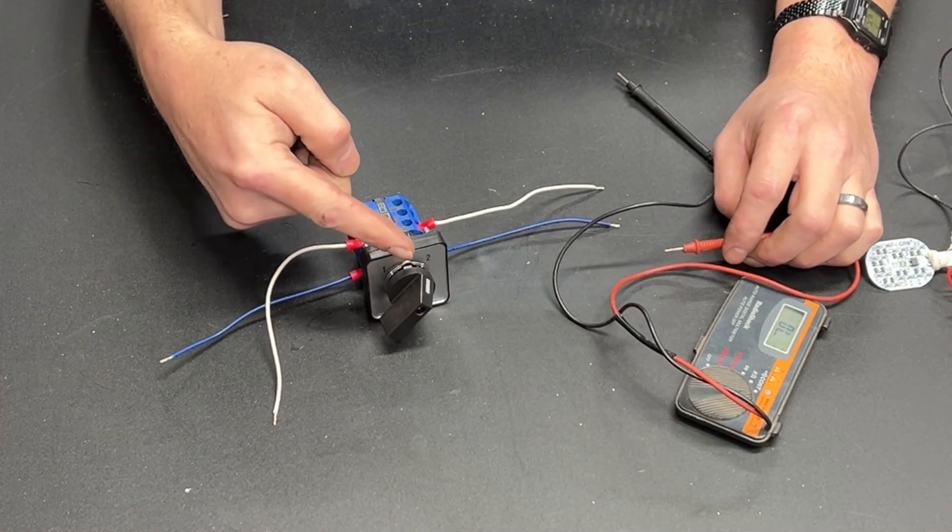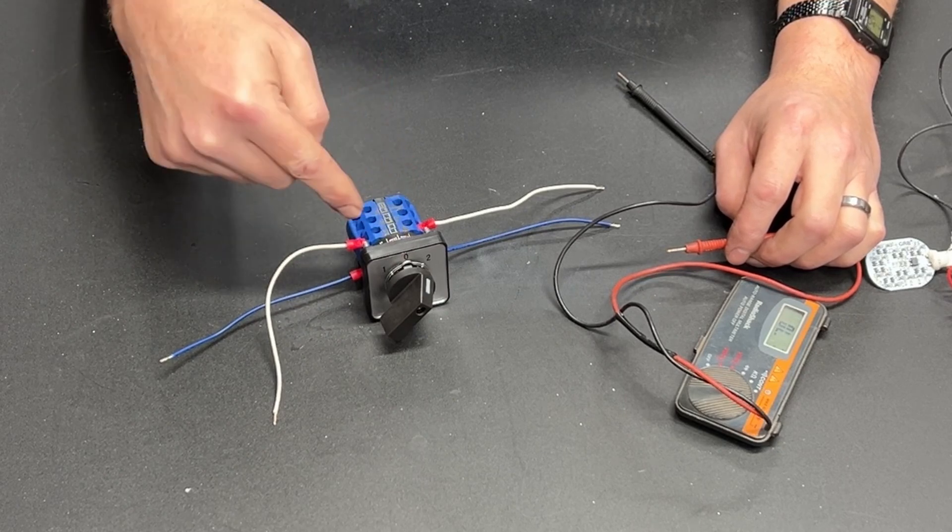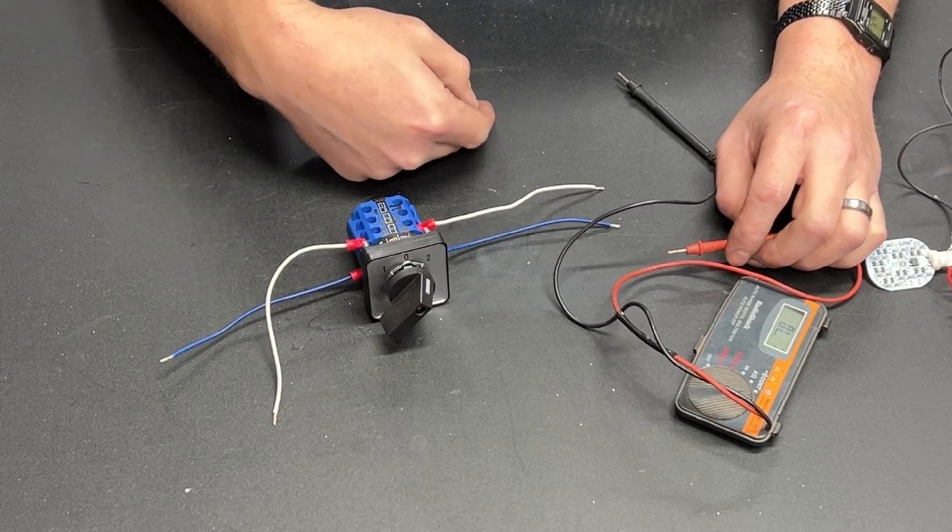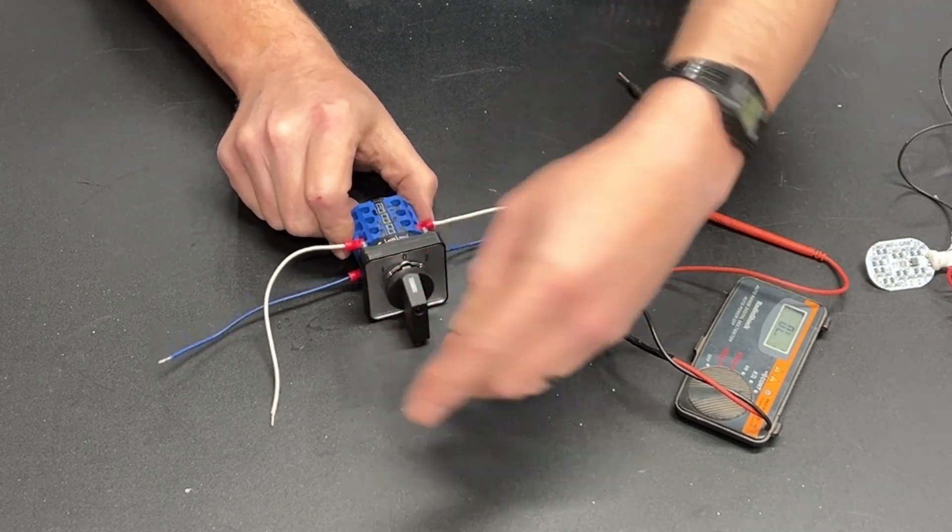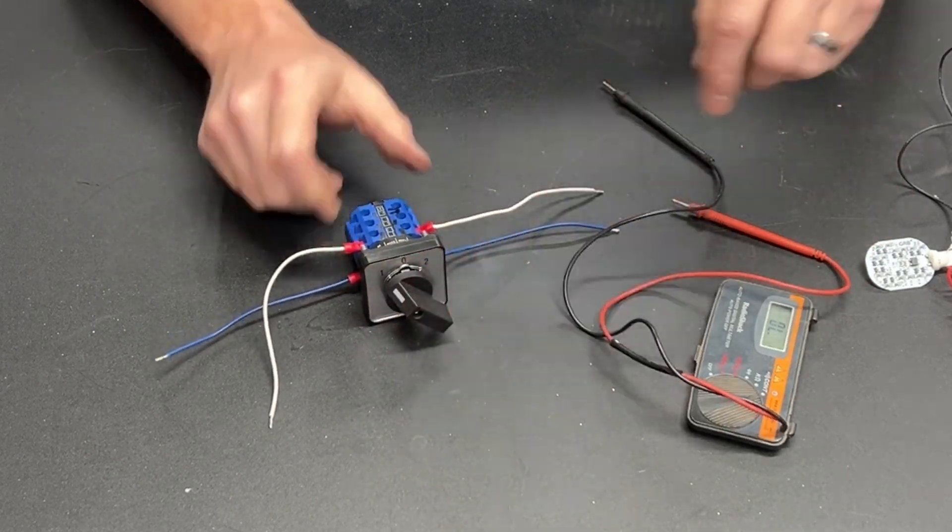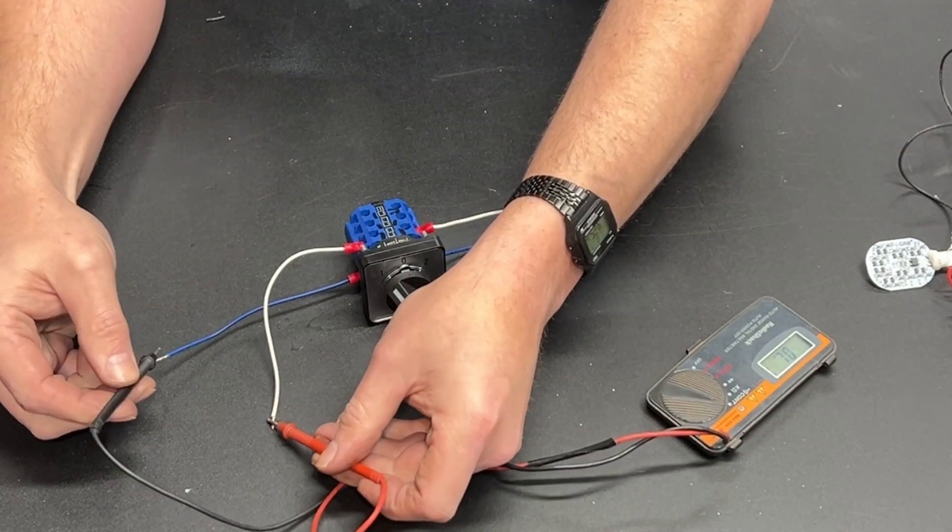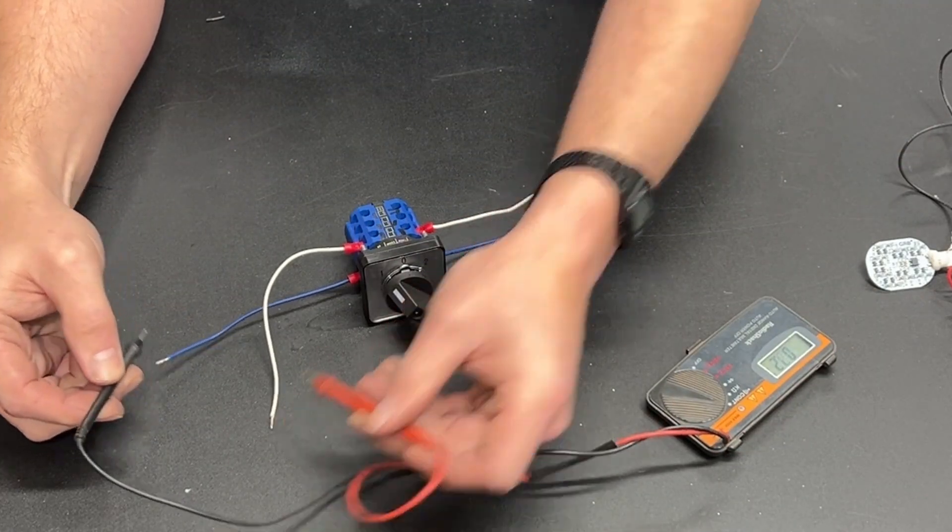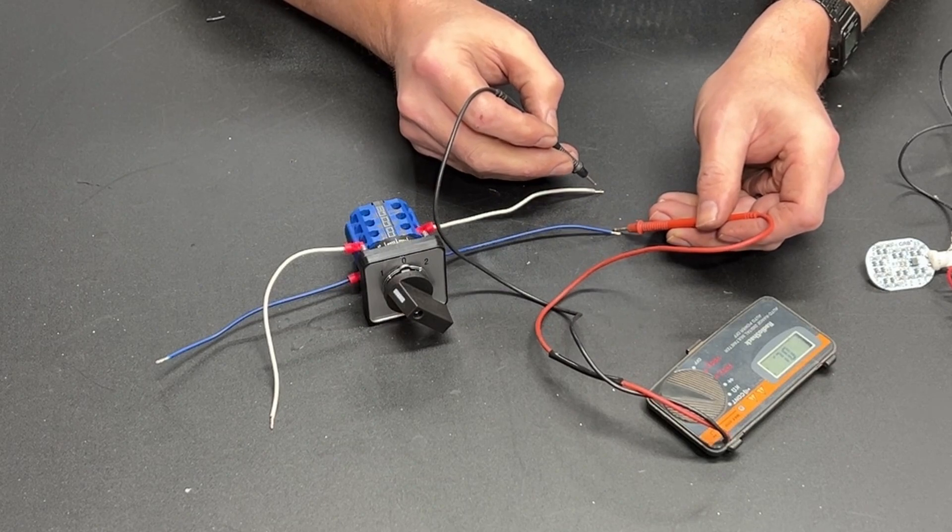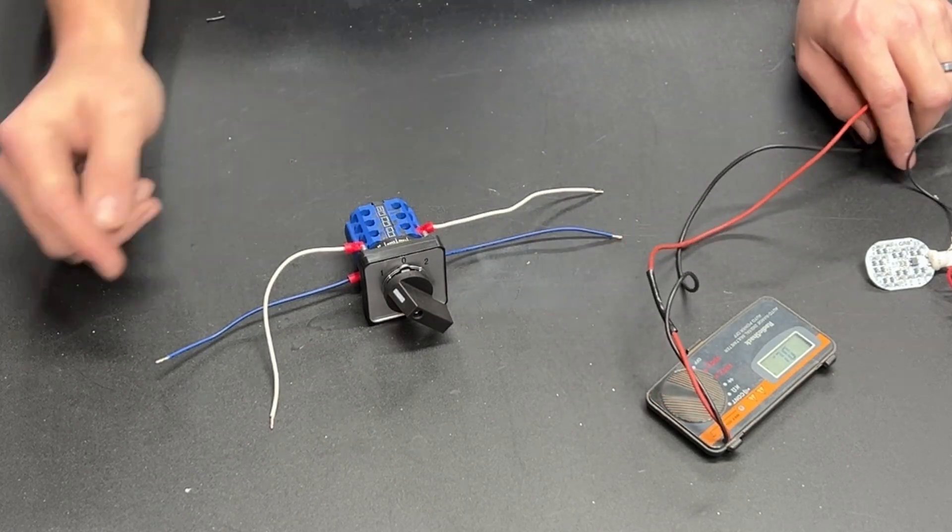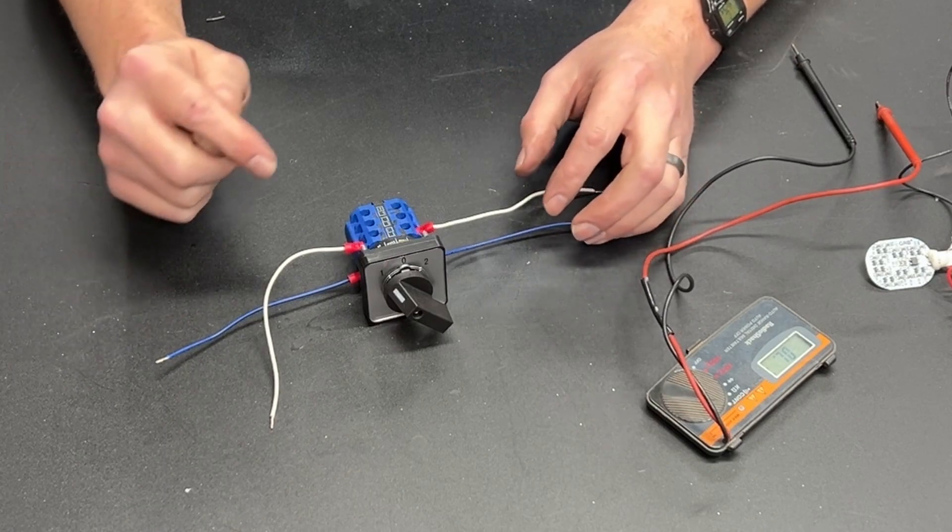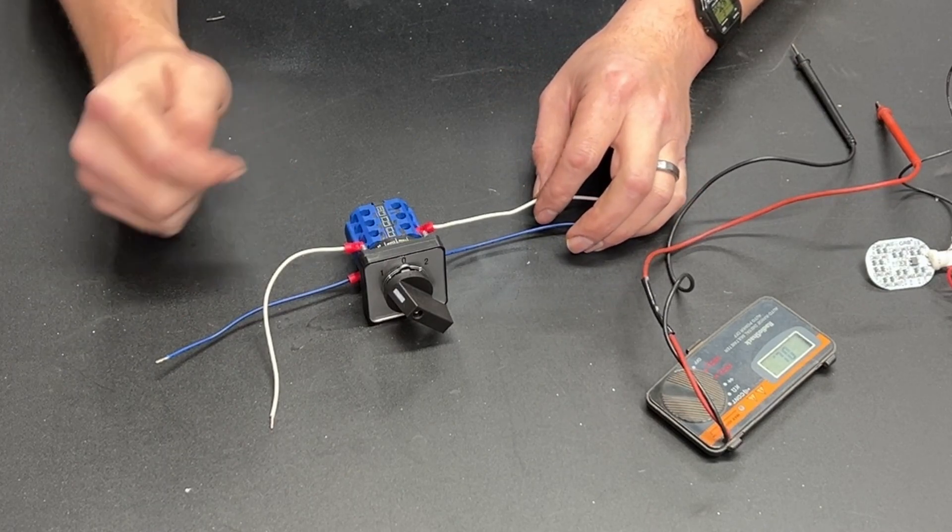So basically this changeover switch, there are three banks of switches here and it turns all three of them on. But it does nothing for this side. We go back to center off. We go the other direction. Now we have continuity. Again if we come and touch these wires we don't have continuity. That is how most changeover switches work.